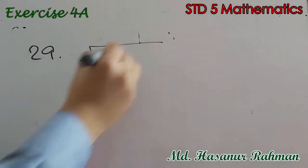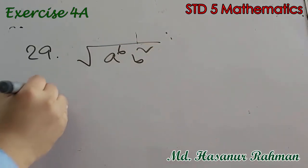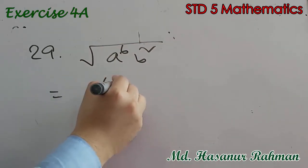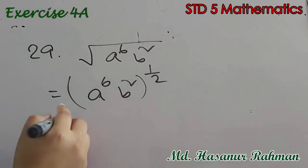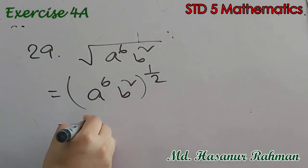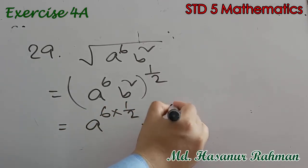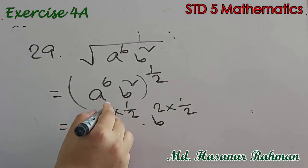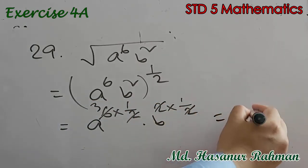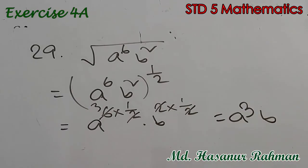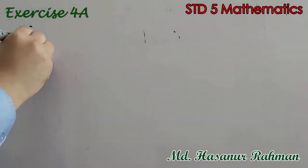Number 29: root over a to the power 6 into b squared. Square root means power half: a to the power 6 into half, into b to the power 2 into half. So 6 divided by 2 is 3, and 2 divided by 2 is 1, giving the result a cubed b. So the answer is a cubed b.